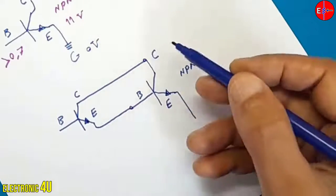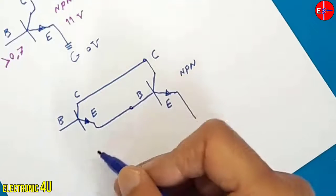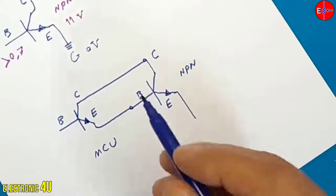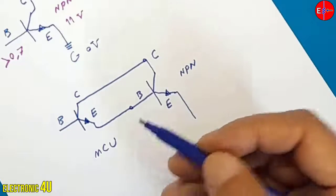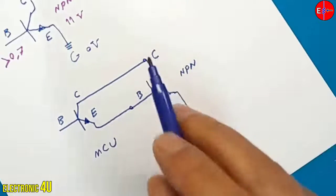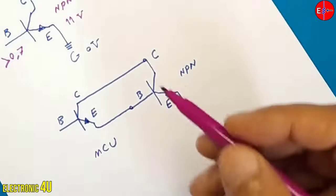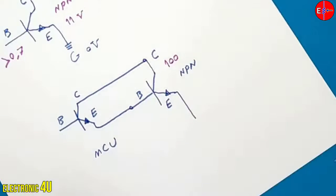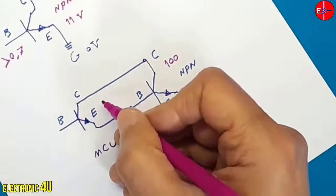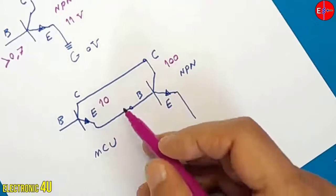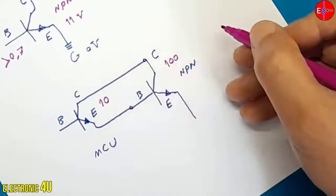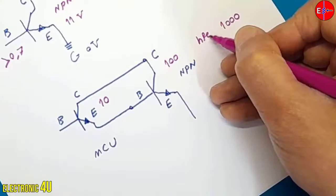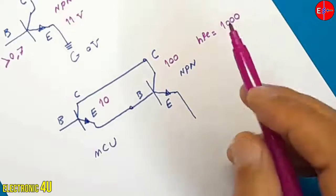So the power transistor is turned on with the help of the first transistor, and the microcontroller can turn on the first transistor with a low current. What is important here is the current gain. The HFE values of the two transistors are multiplied together. For example, we consider the HFE of the main transistor to be 100 and the HFE of the first transistor to be 10. The product of these two becomes 1000. So the combined HFE of the two together is 1000. That's good, but there is still a problem.